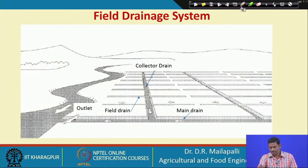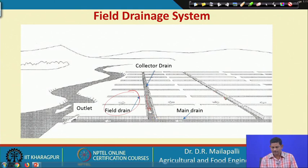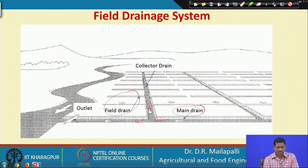Here the field drainage system, if you recollect from the previous lecture, has a collector drain or field drain. These are the laterals in the field which collect the excess water on the surface to the collector drain. All the collector drains lead water towards the main drain, and the main drain conveys water towards the outlet.